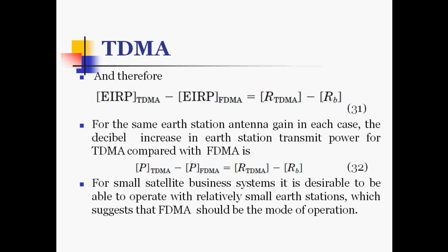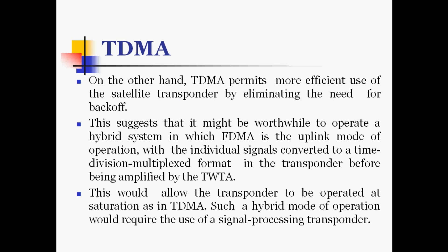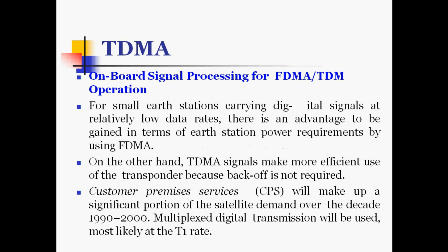On the other hand, TDMA permits more efficient use of satellite transponders by eliminating the need for backoff. This suggests that it might be worthwhile to operate a hybrid system in which FDMA is the uplink mode of operation, with individual signals converted to a time division multiplexed format in the transponder before being amplified by the TWTA. This would allow the transponder to operate at saturation as in TDMA. Such a hybrid mode requires the use of signal processing transponders.